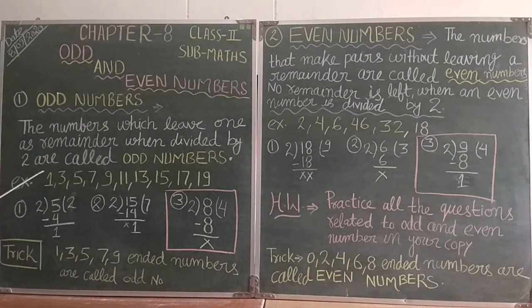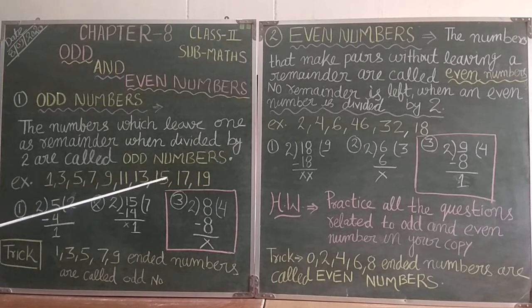I will help you understand with some examples. 1, 3, 5, 7, 9, 11, 13, 15, 17, 19. These are all odd numbers, okay?